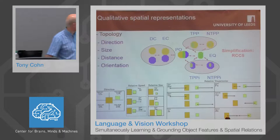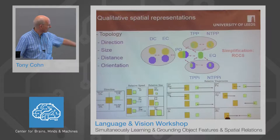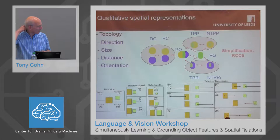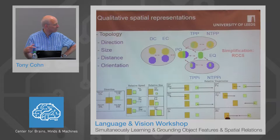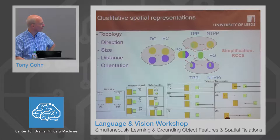You might want to have directions — there are lots of different qualitative direction calculi. Here's one with just four distinctions: upper left, upper right, lower left, lower right. There's also relative speed, relative size, and the so-called qualitative trajectory calculus illustrated on the right, which tells you about whether two objects are moving in the same direction, opposite directions, one being static, or moving towards and away from each other.